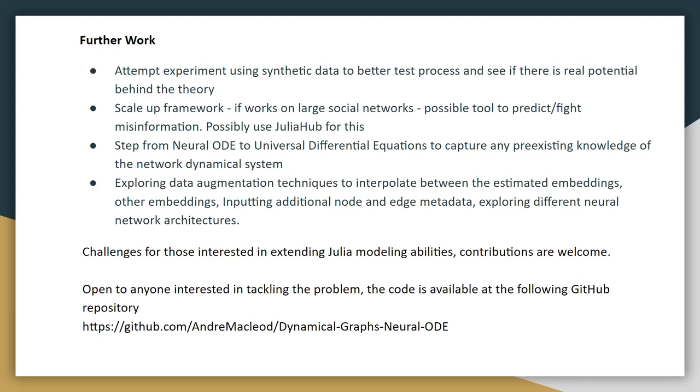And then if you know a bit more, you can step from neural ODEs to universal differential equations. These capture any pre-existing knowledge of a network dynamical system you have, and uses neural networks to improve on the system even further, improve the model even further. Then you have exploring data augmentation techniques, improving neural network optimizations. You could try inputting additional node and edge metadata, different neural network architectures, different embeddings, for example. These are all challenges for people that are interested in moving this project along, and this would extend Julia modeling abilities.